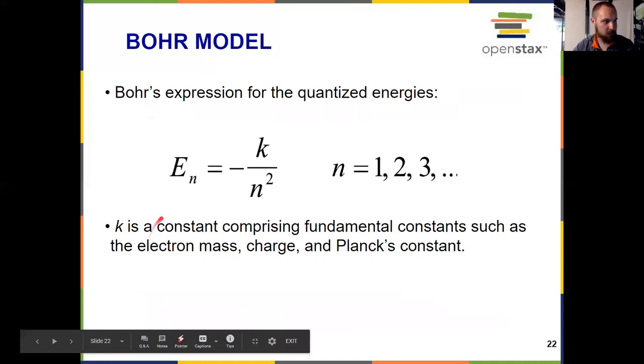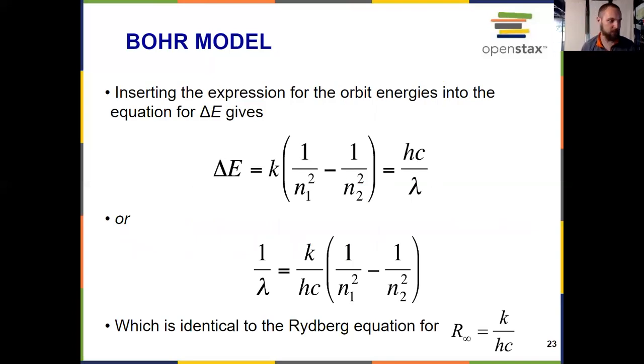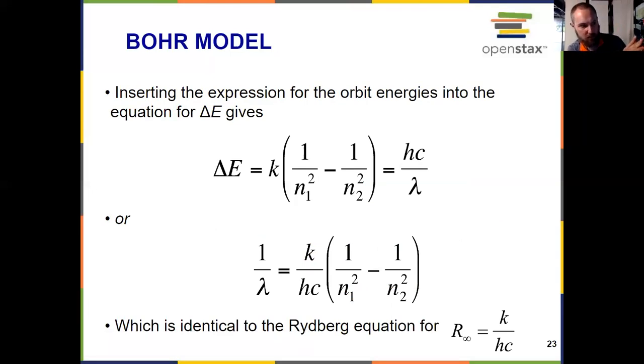Bohr gave us his expression for quantized energies. En being the energy is equal to negative k, which is a constant, over n squared. And n is a principal quantum level - it has to have a whole number value. Bringing everything in the Bohr model together with the earlier observations, we can insert that into the earlier calculation for orbital energies, which gives us a final equation: one over lambda, the wavelength, equals k, the constant, over Planck's constant times c, the speed of light, times one over n1 squared minus one over n2 squared. This is our transition between levels. The big takeaway here is not as much using this equation to do calculations. It's more the fact that Bohr put all these ideas together and came up with an equation that was identical to the Rydberg equation that we saw in the first video, which was kind of a way to solidify these ideas.